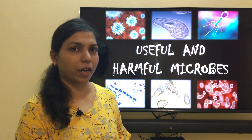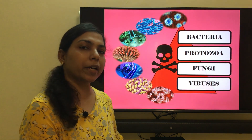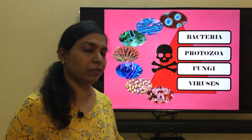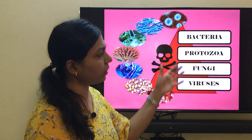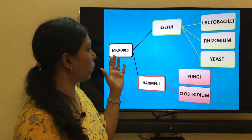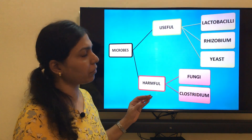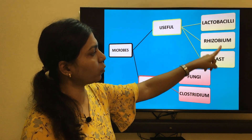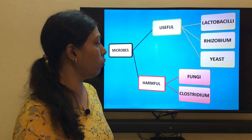Welcome to the second part of our chapter on useful and harmful microbes. In the first part we learned that microorganisms are different types of living organisms which can only be seen with a microscope — bacteria, protozoa, fungi, and viruses. Microbes are categorized as useful or harmful, and we already covered lactobacilli, rhizobium, and yeast and how they are useful in our day-to-day life.